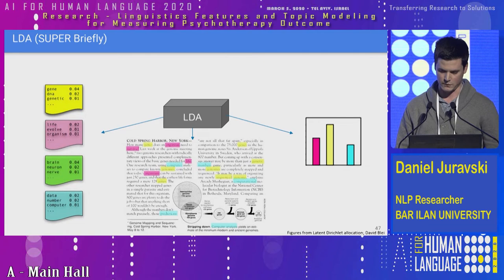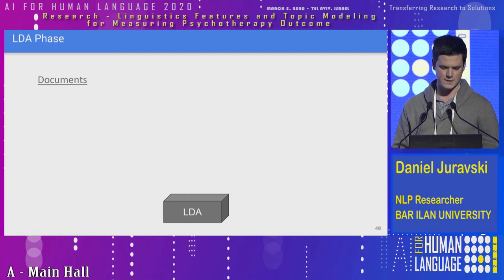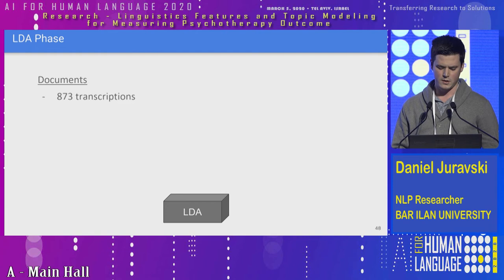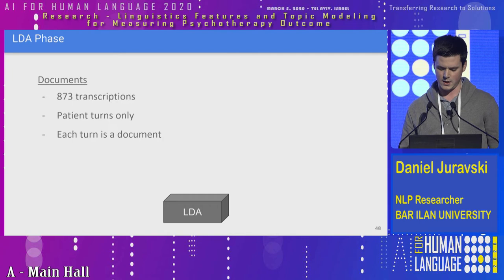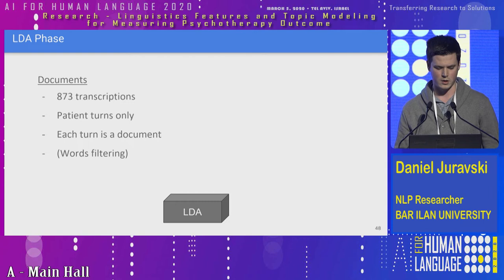What is the definition of a document in our scenario? We have more than 800 transcriptions, and every transcription is more than an hour-long session of talk between the patient and the therapist — which cannot be defined as a single document, given the assumption that a document is composed of a small number of topics. So what we did is use only the patient's turns and defined each turn as a document. We also applied common word filtering approaches, filtering common words, rare words, and non-informative words. As a result, we got 28K documents. The second parameter we needed to define is K, the number of topics. We tested for K between 50 and 300 and found that our model performed best with 200 topics.